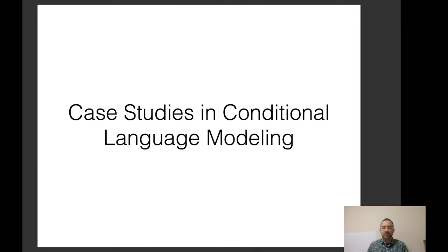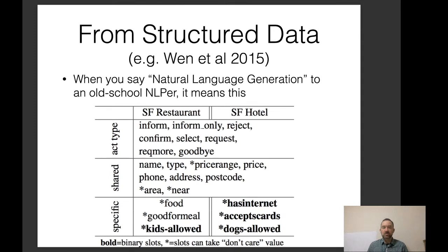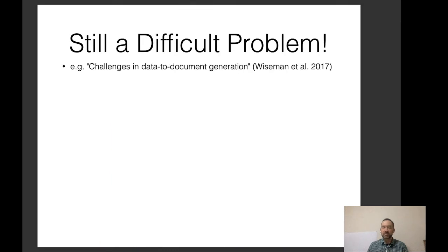Now I'd like to talk about a few case studies in conditional language modeling — a very broad technique applicable to many directions. One example is generation from structured data. In a dialogue system, you might have a certain intent to express in a structured format like a table, then generate a sentence corresponding to that intent. This is used broadly now in generating weather reports and websites, for example.